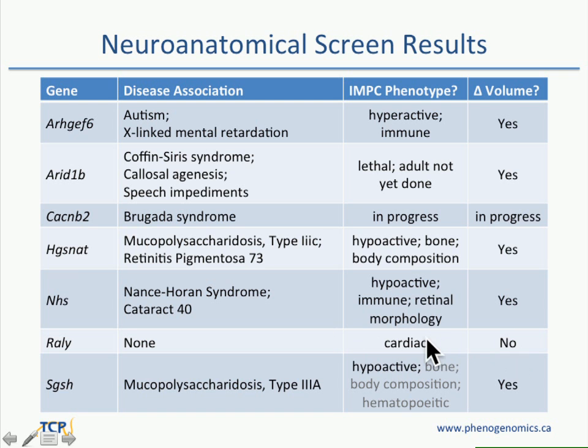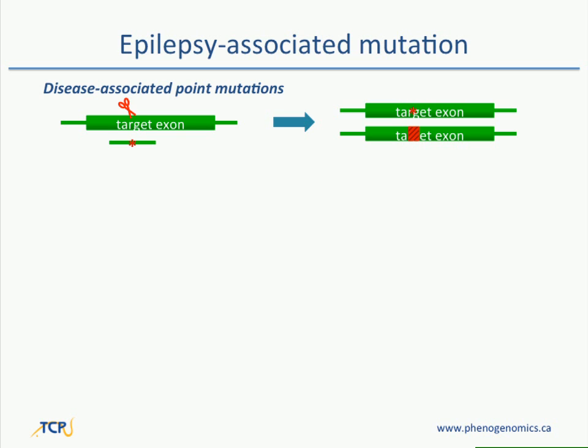The other thing I want to talk about is that we also make disease-associated point mutations. Essentially, you co-inject a single-strand oligonucleotide repair template with your CAS9, and you get two alleles out: a null allele usually from an indel, and your point mutant allele. The indel alleles are usually at about a two-to-one ratio to the point mutants. So it's a really nice system to get two mutants for the price of one.